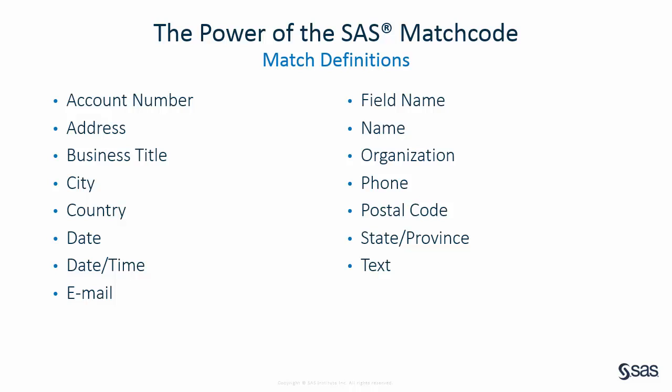Listed here are some of the match definitions provided in the SAS Quality Knowledge Base for contact information. Match definitions are created for specific data types — for example, name and organization — since the logic for generating their match codes would be different depending on the type of data. For example, the name match definition takes into account nicknames such as Mike for Michael.